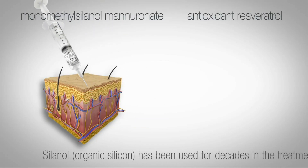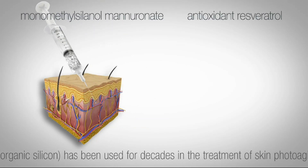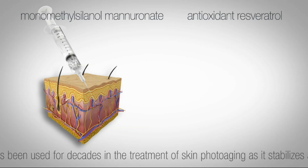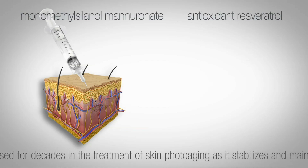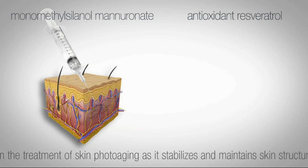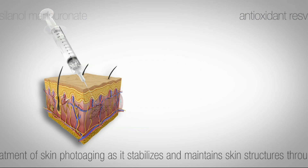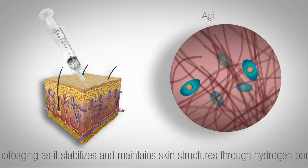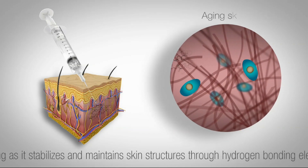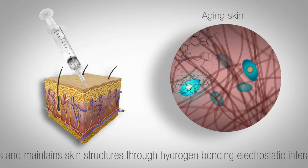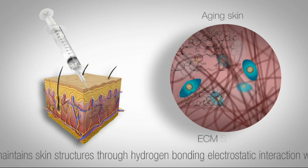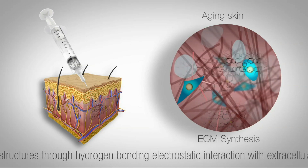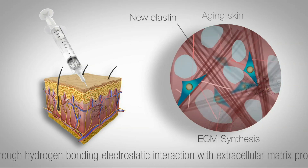Silanol, also known as organic silicon, has been used for decades in the treatment of skin photoaging, as it stabilizes and maintains skin structures through hydrogen-bonding electrostatic interaction with extracellular matrix proteins or glycosaminoglycans.